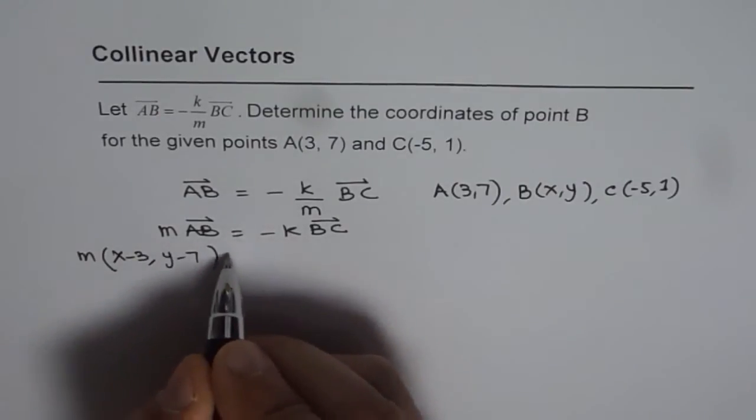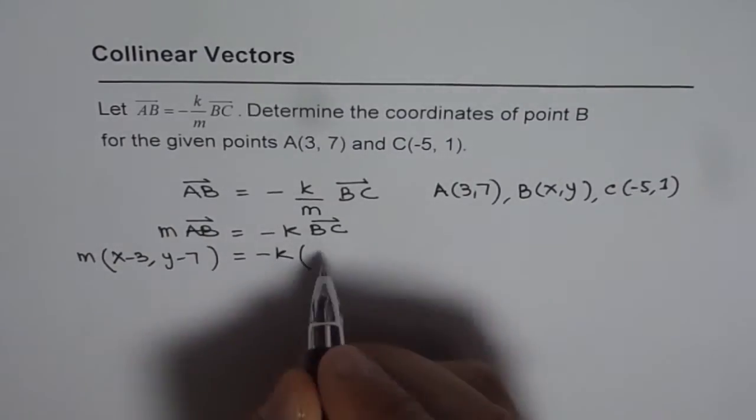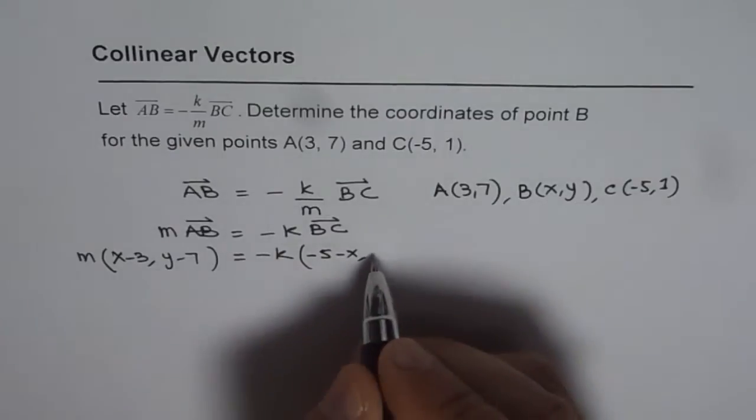That equals AB minus K times B to C. B to C will be (-5 minus X, 1 minus Y).